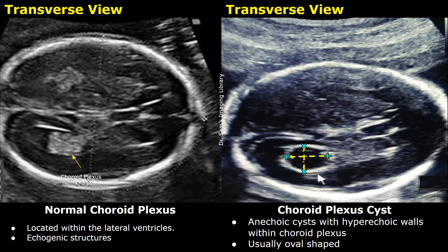Hello everyone, this is Dr. Sam and this video is about Edwards syndrome ultrasound features. Edwards syndrome, which is also known as Trisomy 18, is a genetic disorder in which there is an extra 18th chromosome. This extra chromosome leads to a variety of abnormalities in a fetus. We will compare the normal image of the fetus with features of Trisomy 18 which are commonly seen.